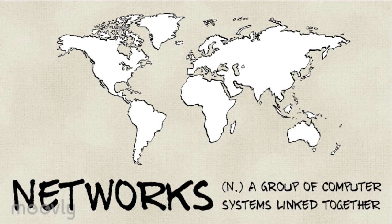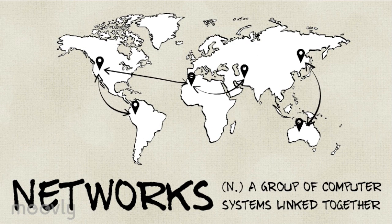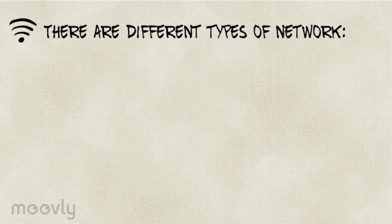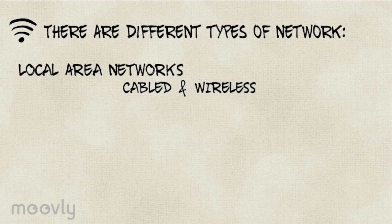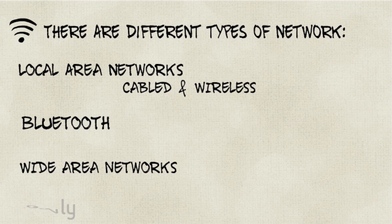Networks are a group of two or more computer systems linked together. There are different types of networks: local area networks, Bluetooth, and wide area networks.